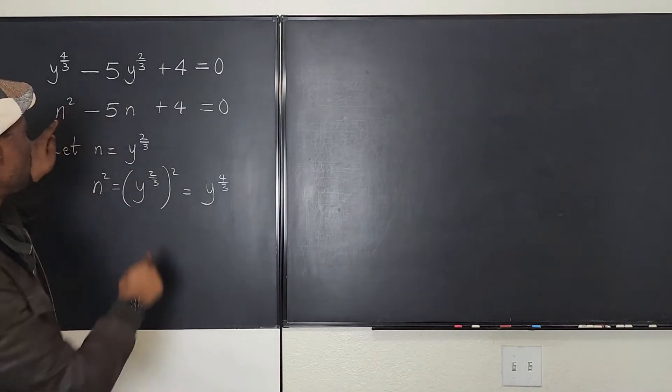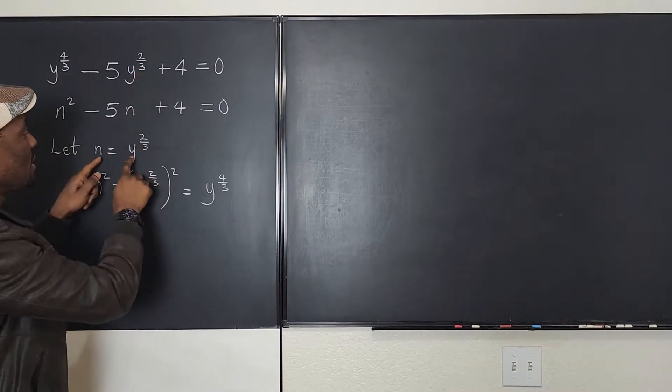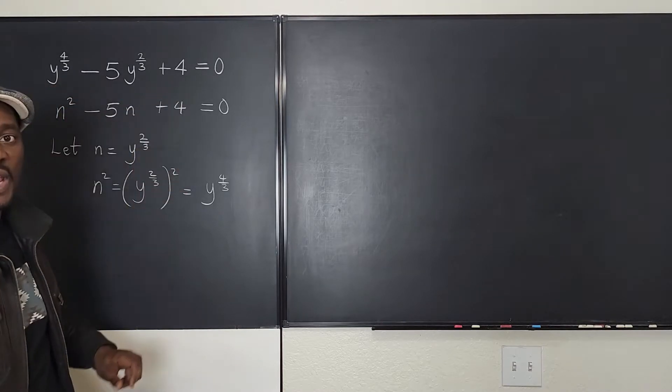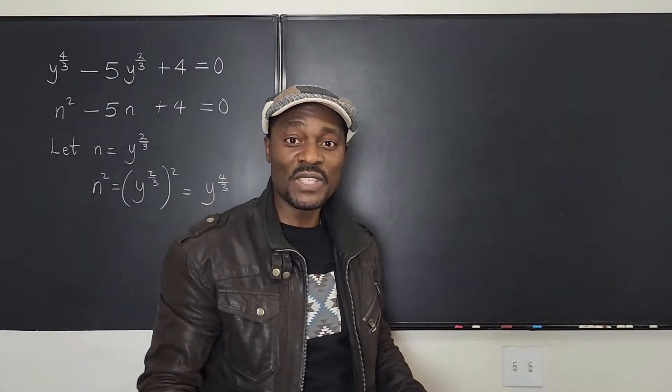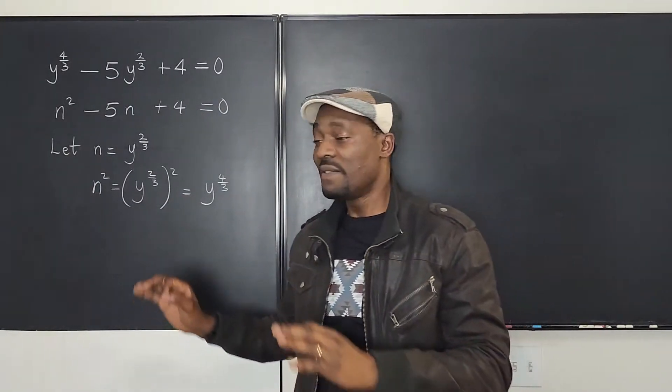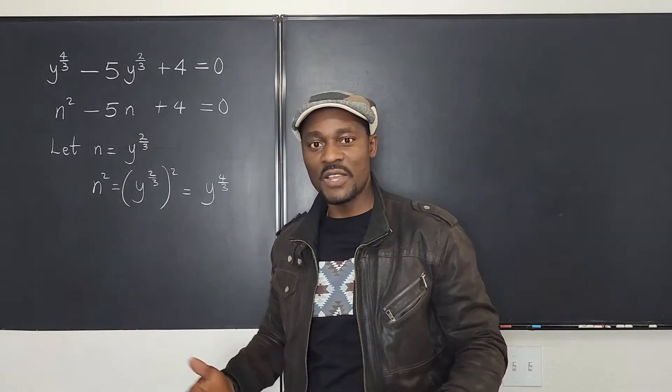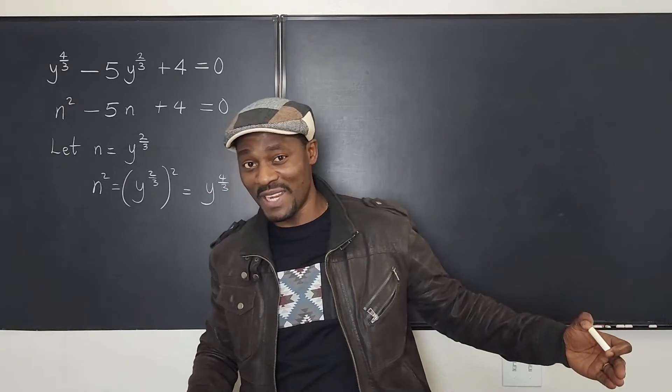Therefore, this is a quadratic equation. If only we replace y to the two-thirds with n, then this is going to be n squared minus 5n plus 4 equals zero. So that's the understanding you take into this. Now, if that's all you need to learn, I would say you can just solve this and get your answer. But there's still another trick that's coming on as we go on in the video.